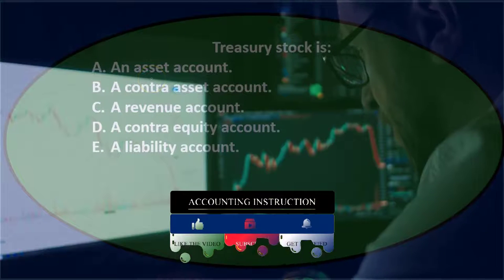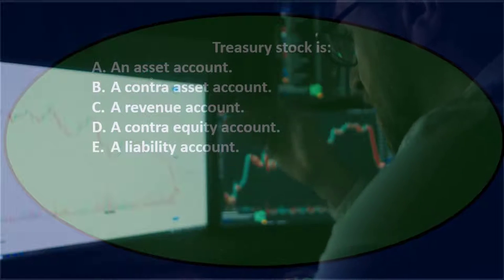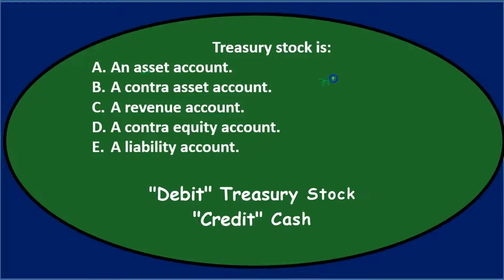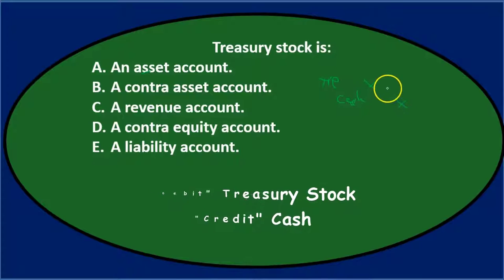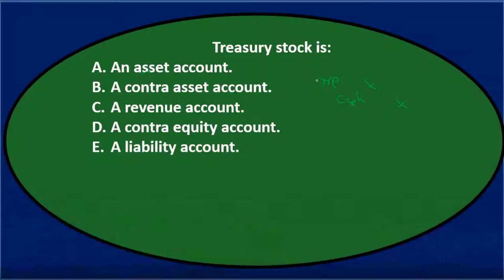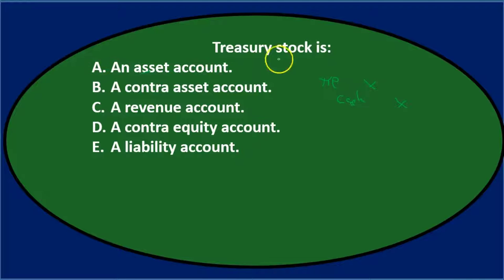If you think of the actual purchase, you might start to think it's an asset because we're basically purchasing our own stock back — we would debit Treasury stock and credit cash. If it were any other stock, that debit might suggest an asset, but just looking at the terminology, stock is probably some type of equity.